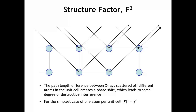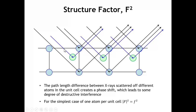Now, what happens if we put an atom at another place, not on a lattice point? X-rays are going to be scattered off that atom as well, and those X-rays will have a different path length than the X-rays scattered off the lower plane of atoms. Because of that, when we're at the condition where Bragg's law is met, the presence of more than one atom in the unit cell leads to some degree of destructive interference, affecting the peak intensities. Analyzing those intensities tells us where the atoms are located in the unit cell.